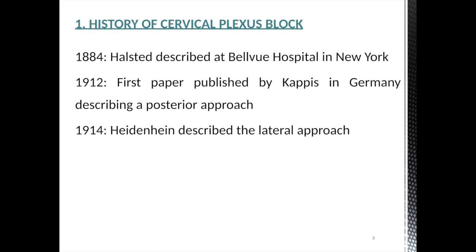In history, the first block of cervical plexus on record is given by William Stewart Halsted. He was born in 1852 and died in September 1922. He is the father of modern American surgery. The date of the first block on record is 1884 — the same year when the Viennese Carl Koller introduced the drug cocaine for the first time in the history of anesthesia, presenting a lecture in New York in August 1884, one month before this block.